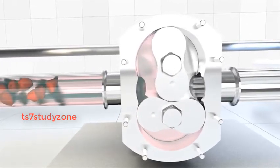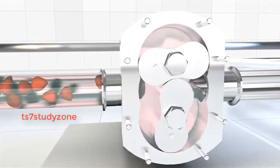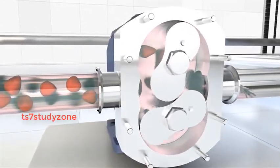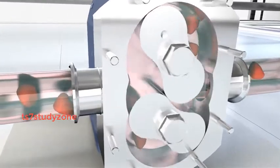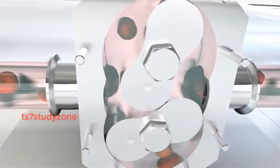The liquid travels around the interior of the casing in pockets between the lobes and the casing. It does not pass between the lobes. Finally, the meshing of the lobes forces liquid through the outlet port under high pressure.